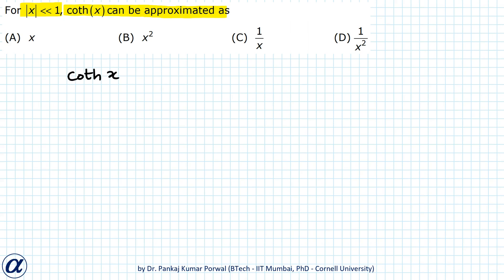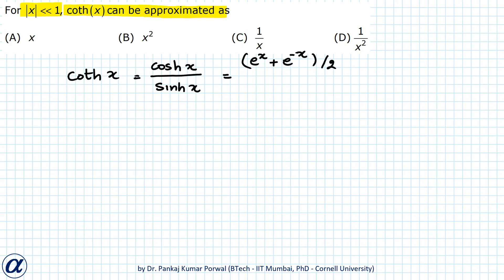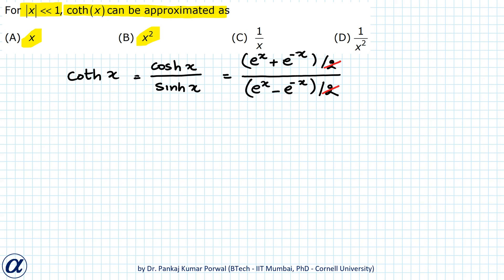Cot hyperbolic x equals cos hyperbolic x upon sin hyperbolic x, which equals e to the power x plus e to the power minus x upon 2, divided by e to the power x minus e to the power minus x divided by 2. The 2s cancel, and I can do Taylor series expansion of e to the power x and e to the power minus x. Because the choices only contain terms with x and x squared, I will do the expansion only up to the second power of x.